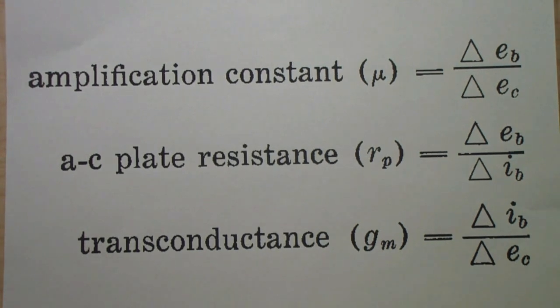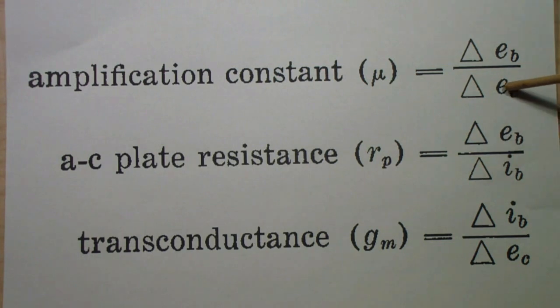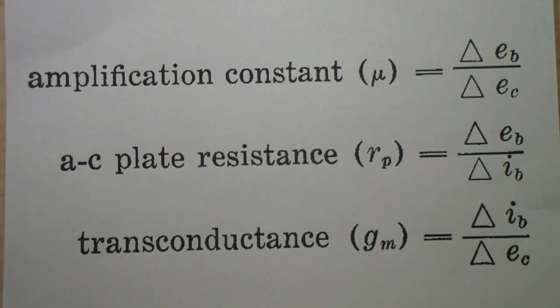A second calculation is the plate resistance. Plate resistance, once again, is simply a ratio, in this case, of a voltage to a current. That is, the plate voltage, EB, to the plate current, IB. And finally, there is this term transconductance. Transconductance just means it's like the effect of the grid on the plate current. And that's measured in mhos, M-H-O-S. It's called a mho because it's actually ohm spelled backwards.